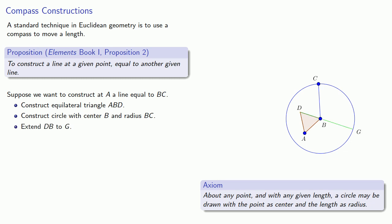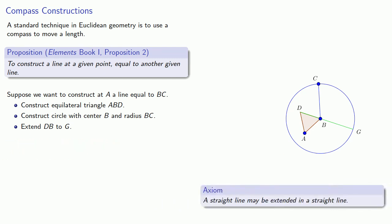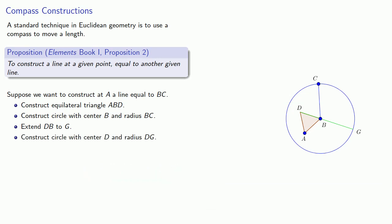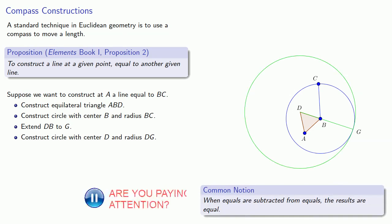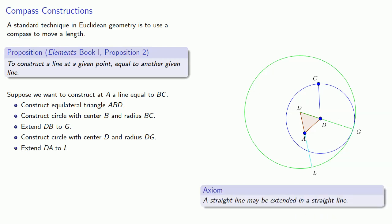We'll extend DB to G. And we can do that because this video is on YouTube. Wait. No. Actually, that's one of our axioms. Our second axiom says that we can extend a straight line in a straight line. We'll construct a circle with center D and radius DG. That's our third axiom. We'll extend DA to L. Again that's extending a straight line in a straight line, our second axiom. And Euclid claims that AL is the required line.